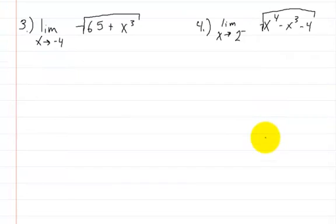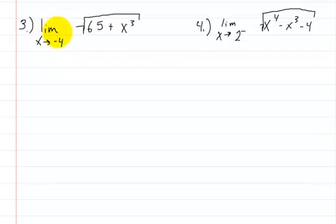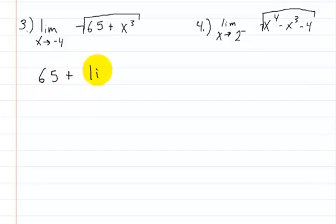On to number 3. We have the limit of the square root of 65 plus x cubed as x approaches negative 4. We're going to apply the limit to the interior parts — we leave the 65 alone and only apply it to x cubed. So it's going to be 65 plus the limit as x approaches negative 4 of x cubed...